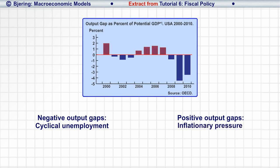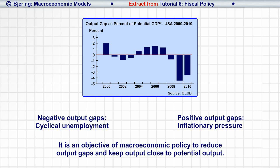Since neither scenario is attractive, it is an objective of macroeconomic policy to reduce output gaps and keep output close to potential output.